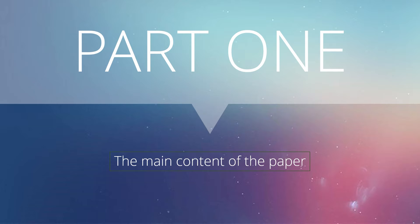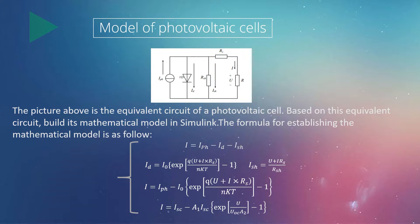Now let's look at the first part, which mainly introduces the main content of the paper. The picture above is the equivalent circuit of the photovoltaic cell. Based on this equivalent circuit, a mathematical model is built in Simulink. The formula for establishing the mathematical model is as follows.